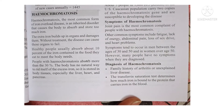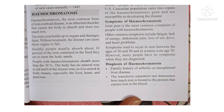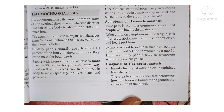Hemochromatosis is the most common form of iron overload disease. In our body, excess iron will be absorbed. It is an inherited disorder that causes the body to absorb and store more iron than needed. Normally, the body does not store excess iron — it is excreted. But in hemochromatosis, there will be too much iron absorption in the body.